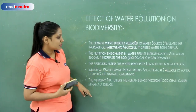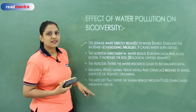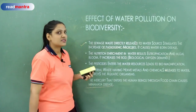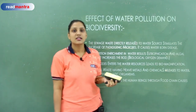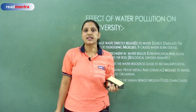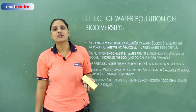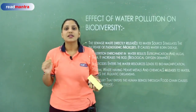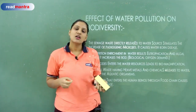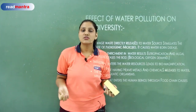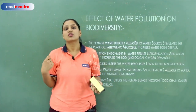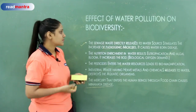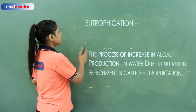Mercury entering human beings through the food chain causes Minamata disease. Minamata disease is a very common disease — mercury reaches fishes, does not get excreted from the body, and if human beings eat such fishes, they suffer very serious problems.